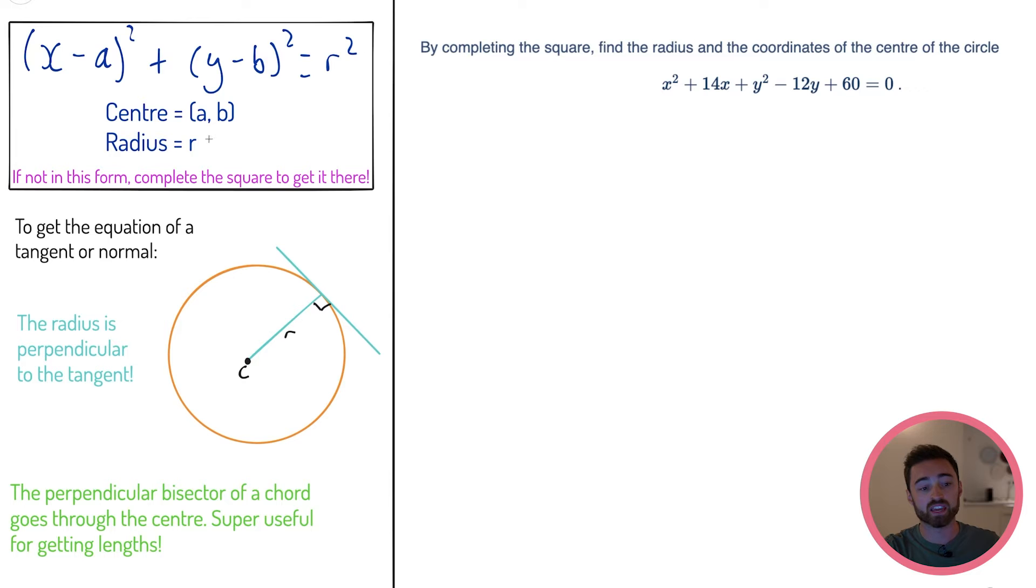The first being the equation of a circle. If a circle is in this form, we can straight away read off the center and the radius. For example, if you have (x - 4)² + (y - 3)² = 2², you know that the center would be (4, 3) and that the radius would be 2. If it is not in this form, we complete the square to get it there.